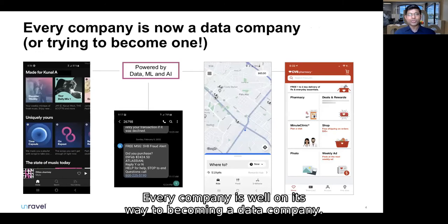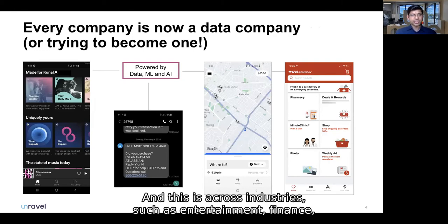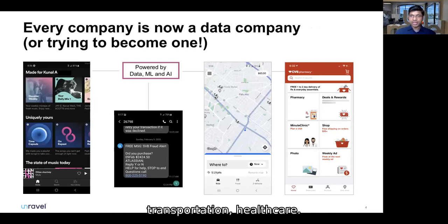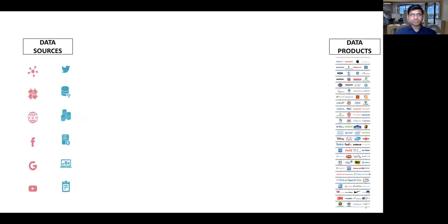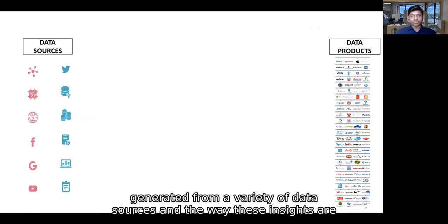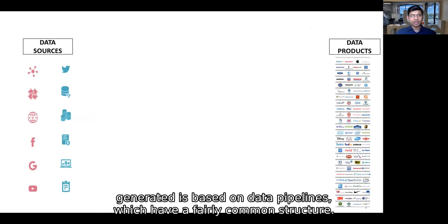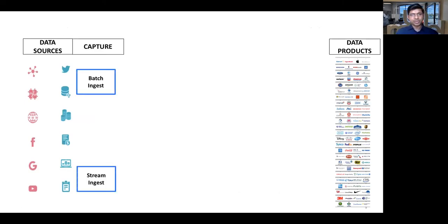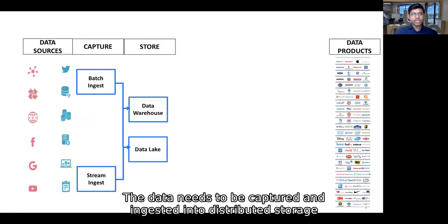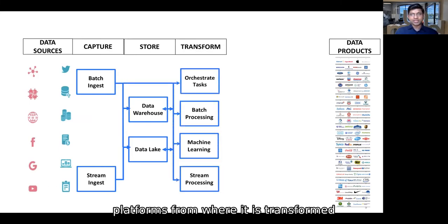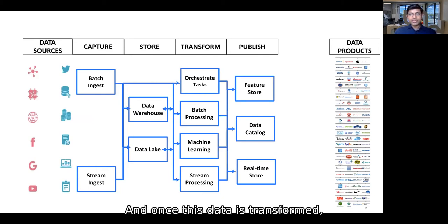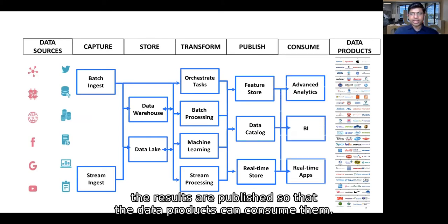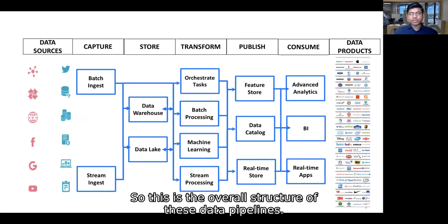Every company is well on its way to becoming a data company — across industries such as entertainment, finance, transportation, and healthcare. These companies are creating advanced data products based on insights generated from a variety of data sources, and the way these insights are generated is through data pipelines with a fairly common structure. The data needs to be captured and ingested into distributed storage platforms, from where it is transformed using advanced compute to generate insights — whether through machine learning or advanced SQL analytics — and once transformed, the results are published so that the data products can consume them.